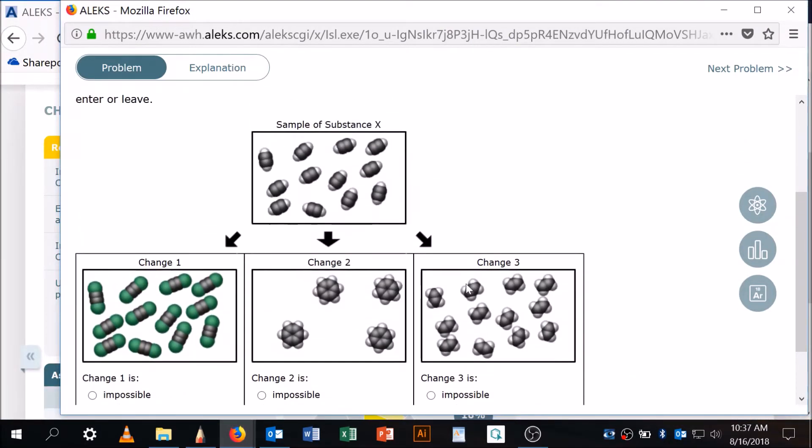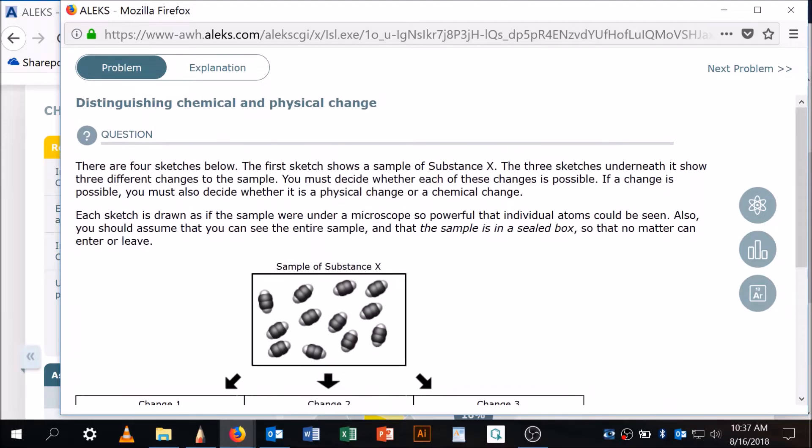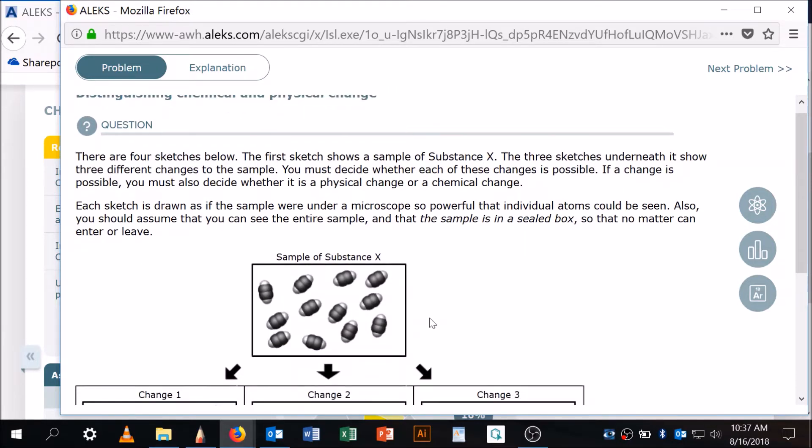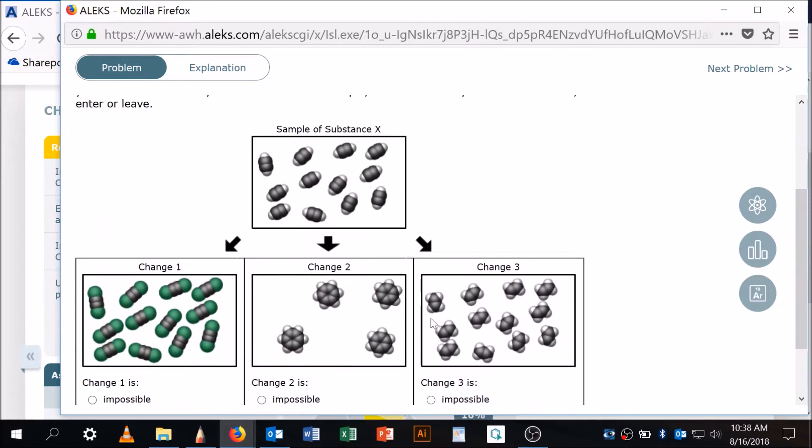So, all right. Distinguishing chemical and physical change. There are four sketches below. The first sketch shows us a sample of substance X, and then the three sketches underneath it show three different changes to the sample. I've got to decide if each is possible, and if it's possible, if it's a physical or chemical change.